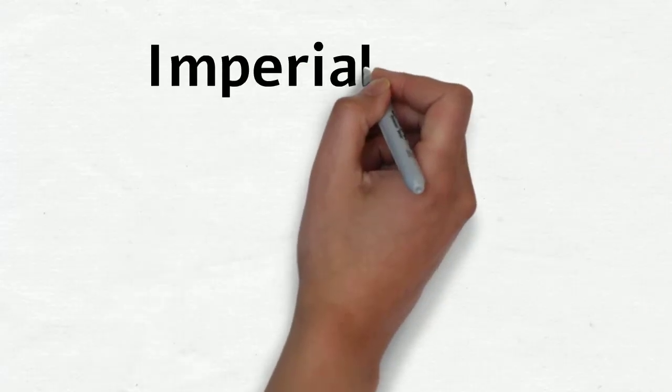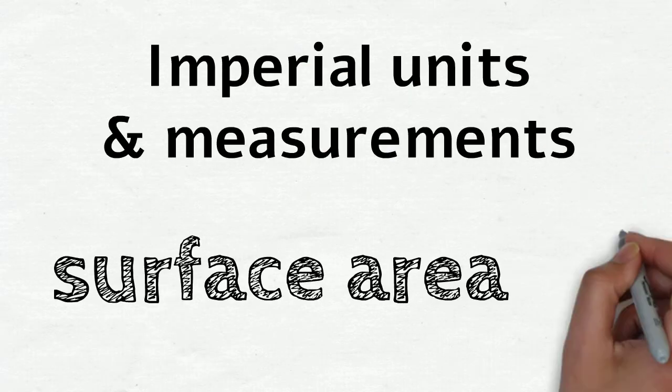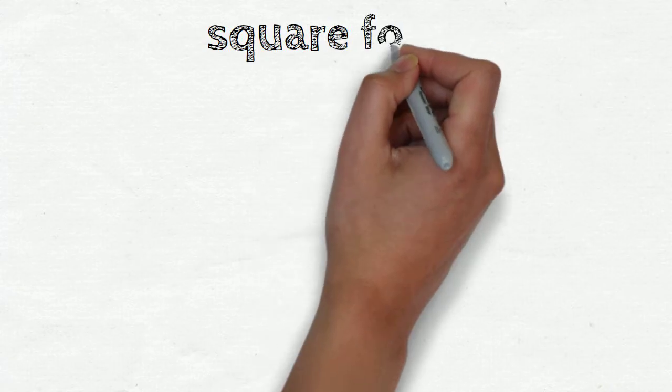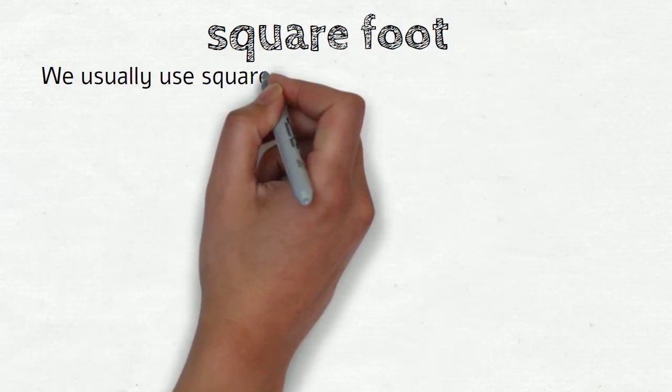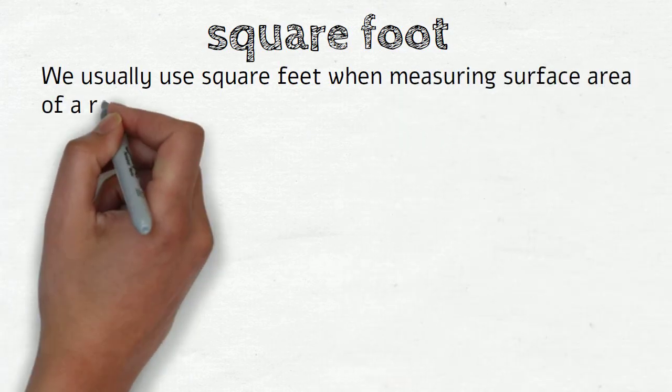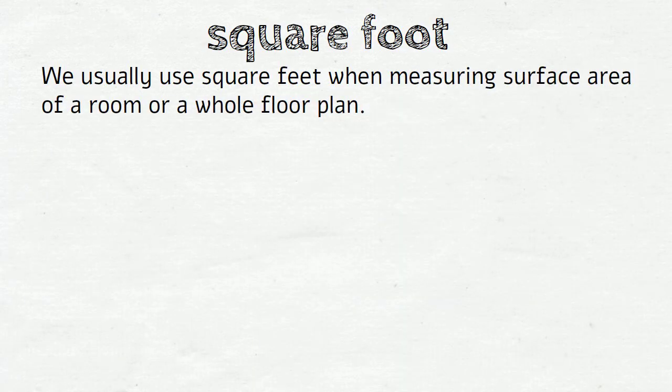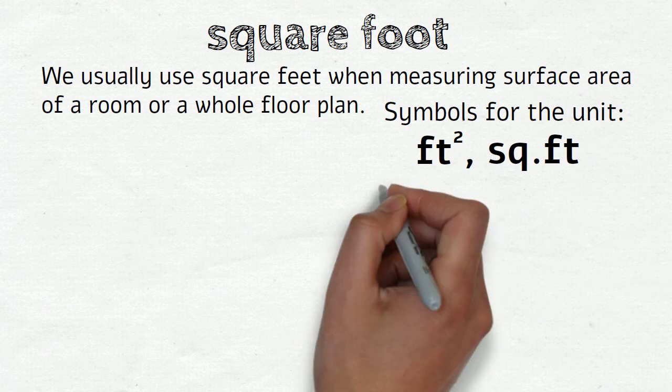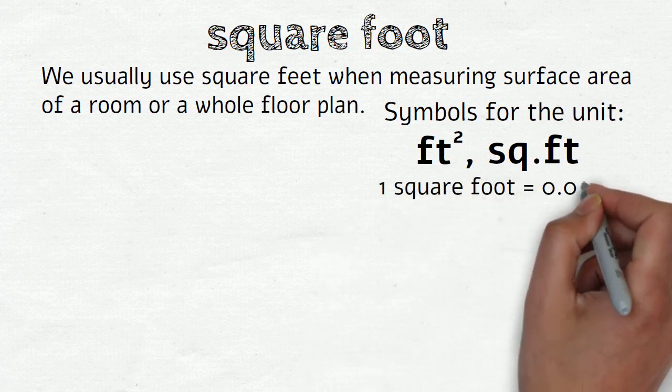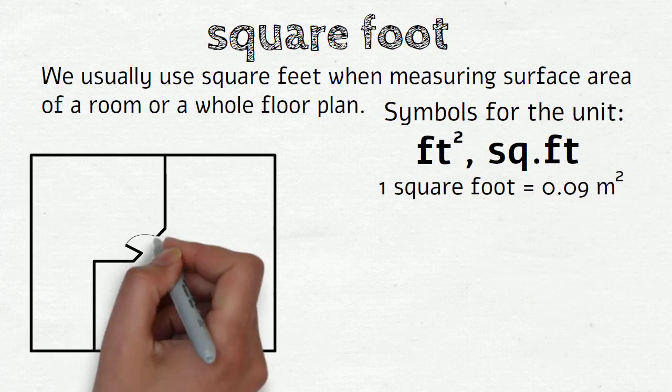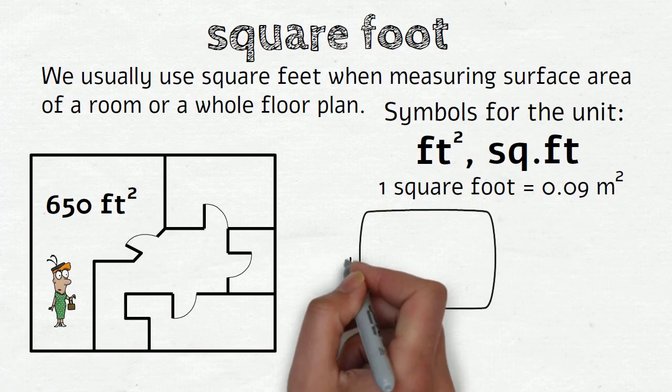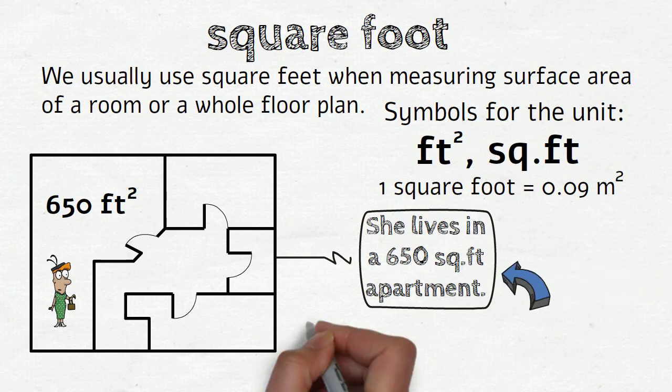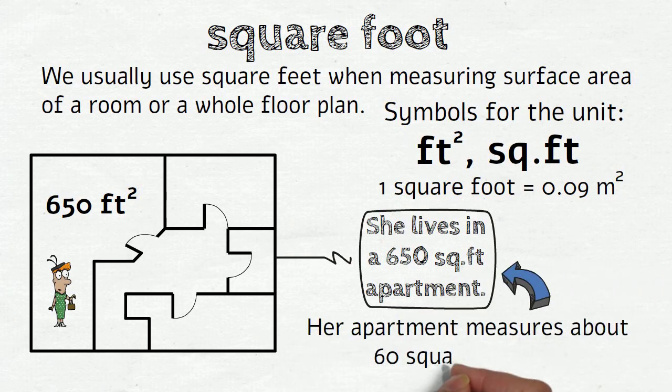Let's now move on to the imperial units and measurements for surface area. The common imperial unit for surface area is square foot. We usually use square feet when measuring surface area of a room or a whole floor plan. The symbols for the unit are ft squared. And 1 square foot equals 0.09 of a square meter in a metric system. So if someone says 'She lives in a 650 square foot apartment,' it means that her apartment measures about 60 square meters.